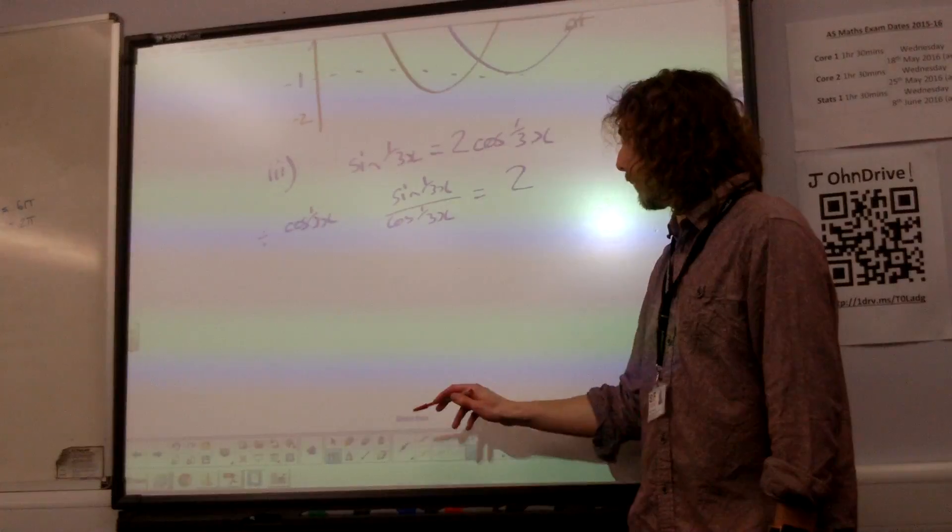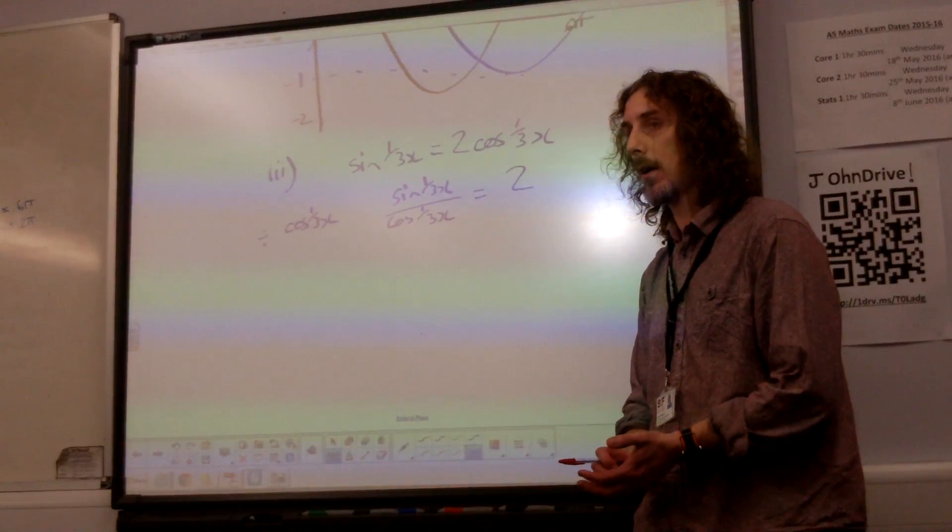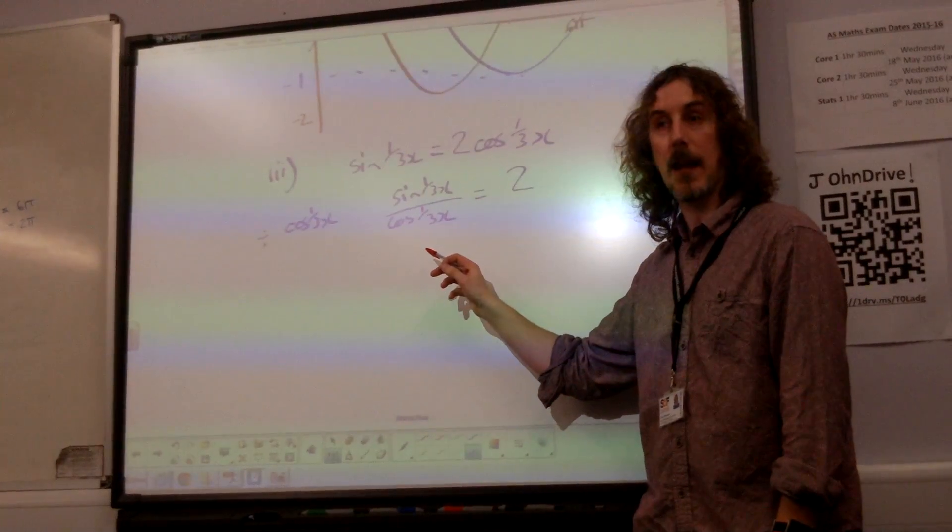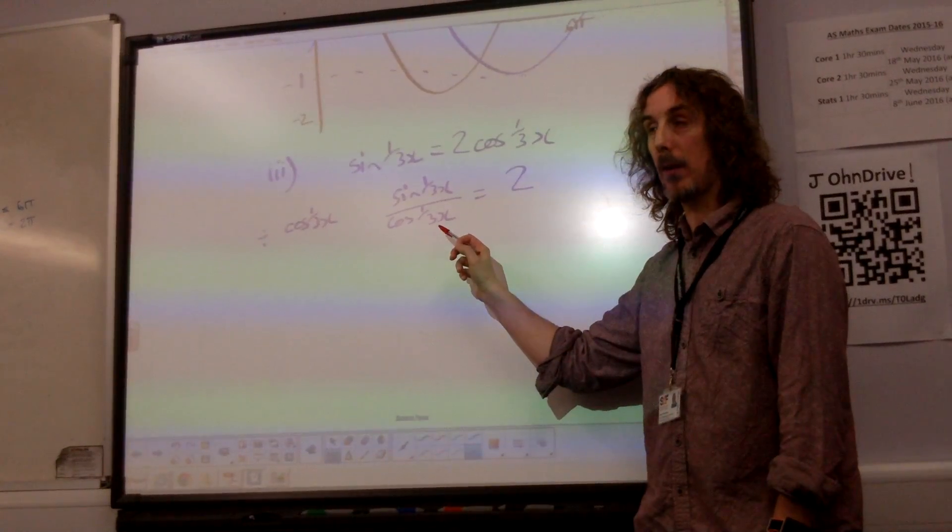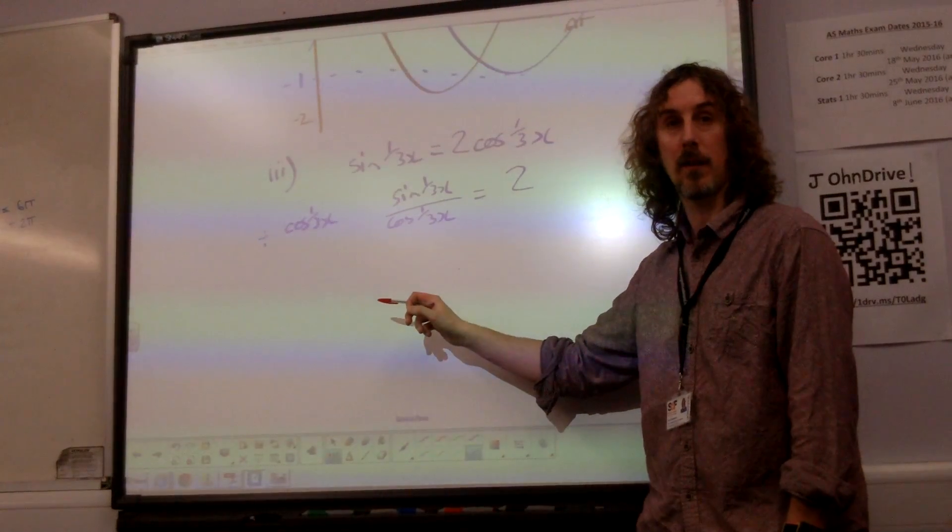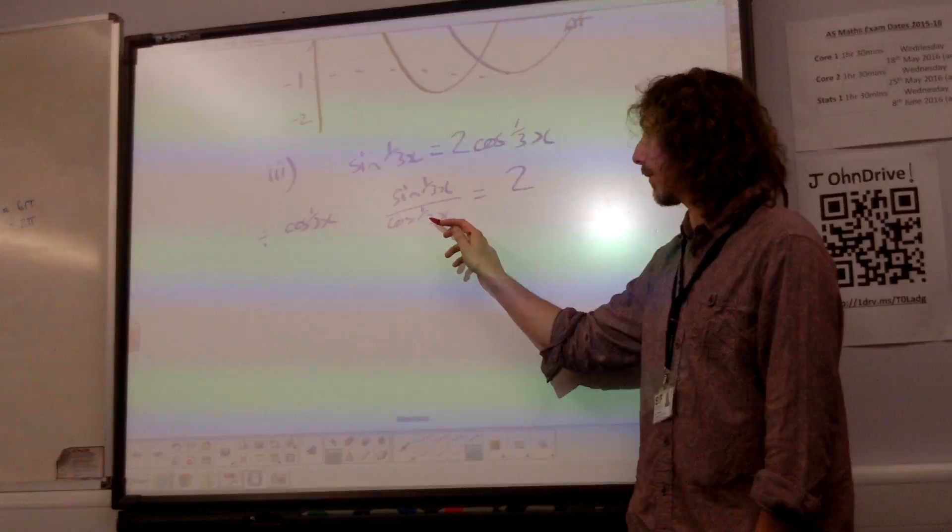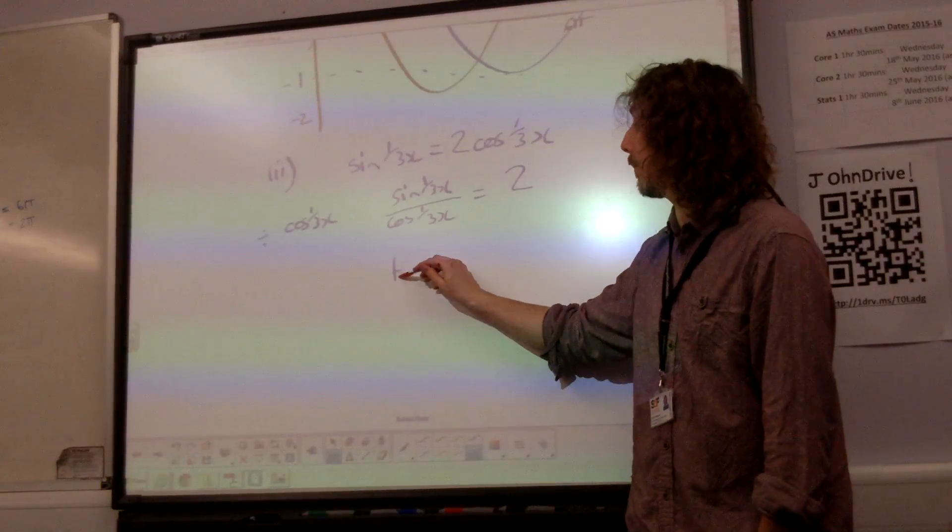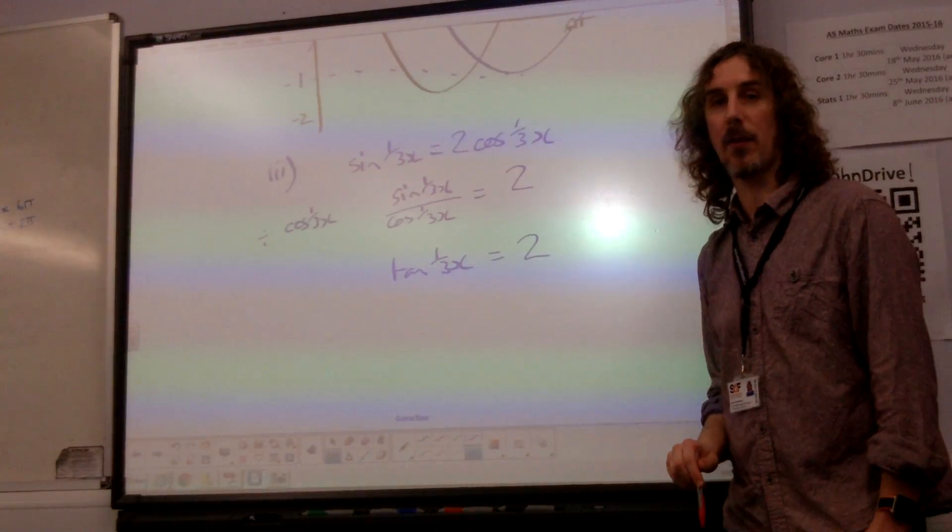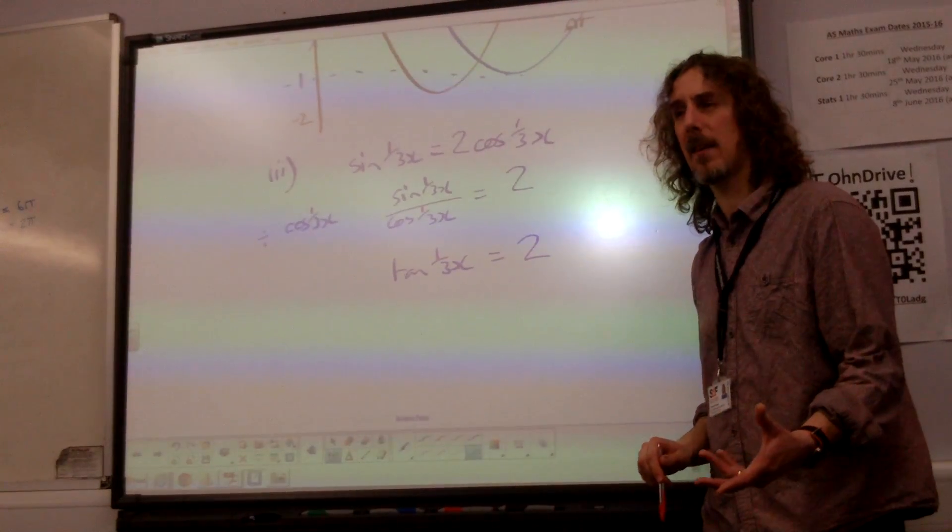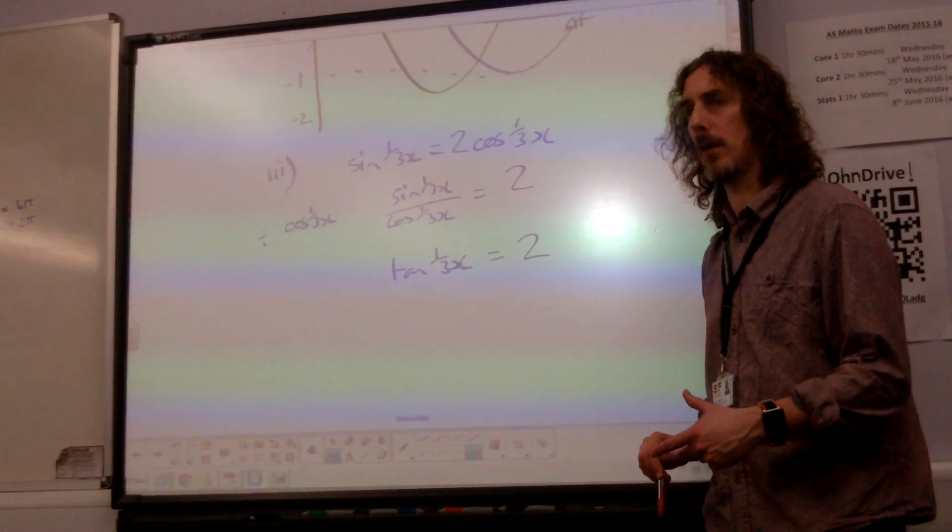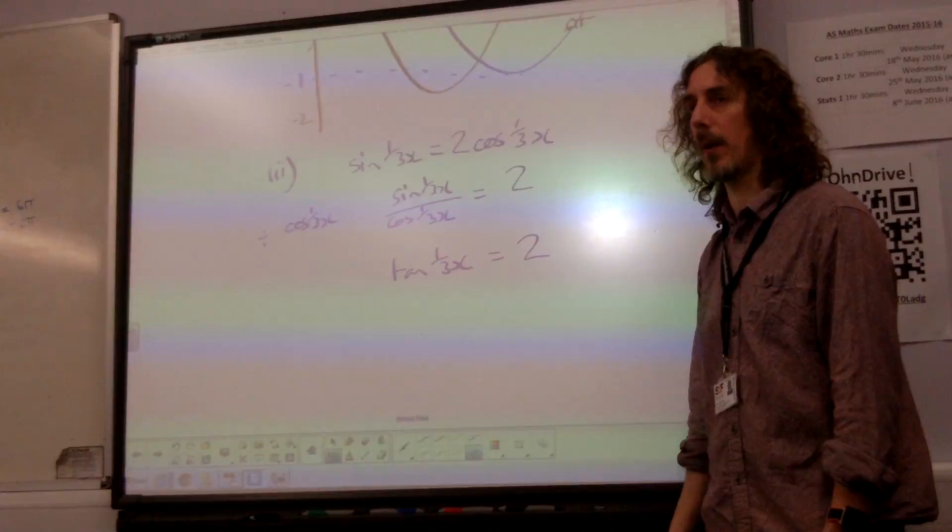Now, this is quite important, and maybe we haven't talked about this enough, but if you do sine a over cos a, you get tan a. If you do sine theta over cos theta, you get tan theta. If you do sine of third x over cos of third x, you must get tan a third x equals 2. Notice that the third x bit doesn't end up canceling out when you do this. OK, that's what we're going to end up with.